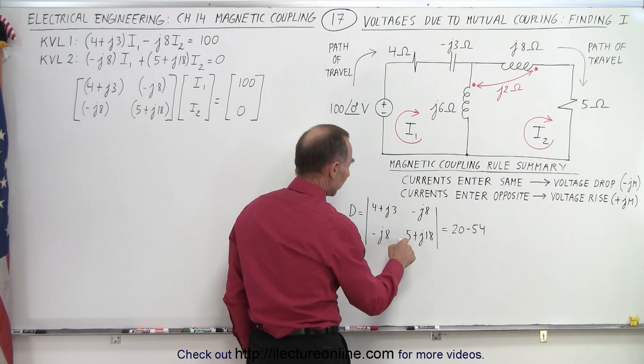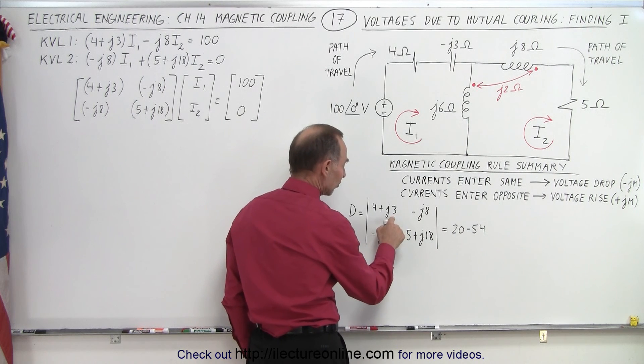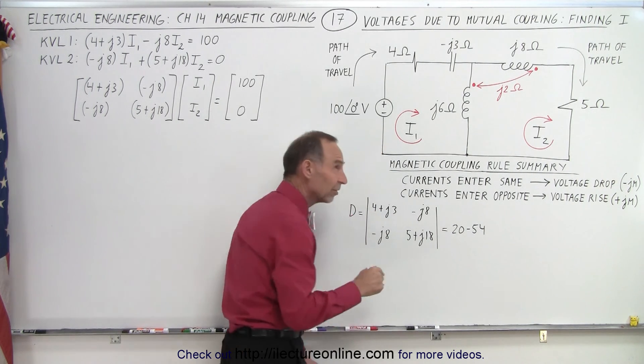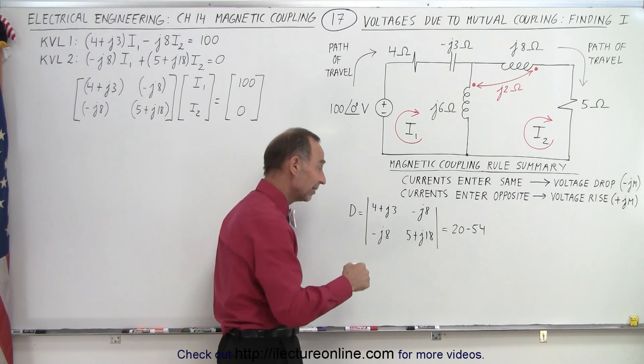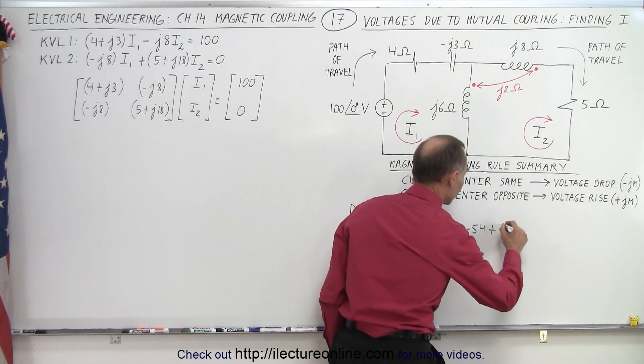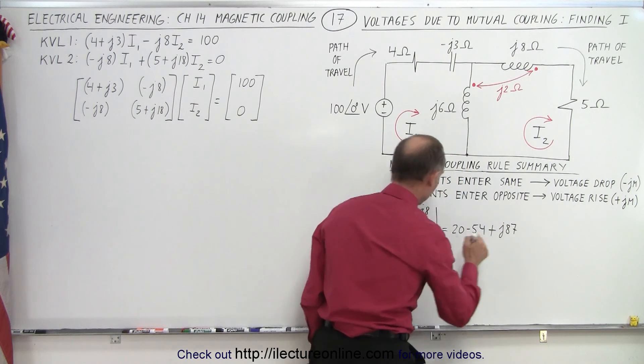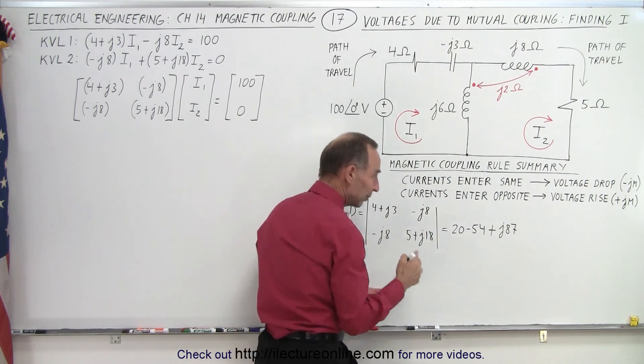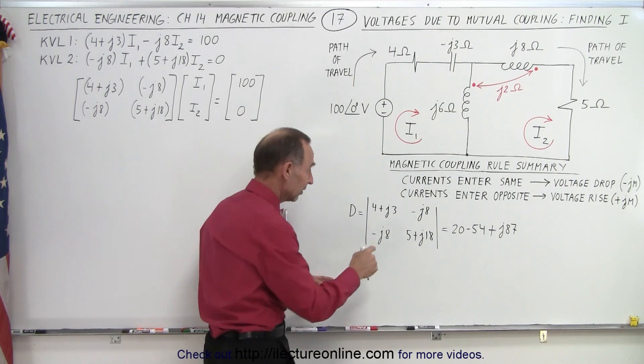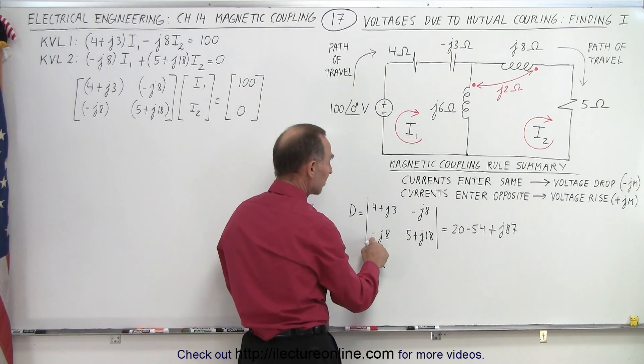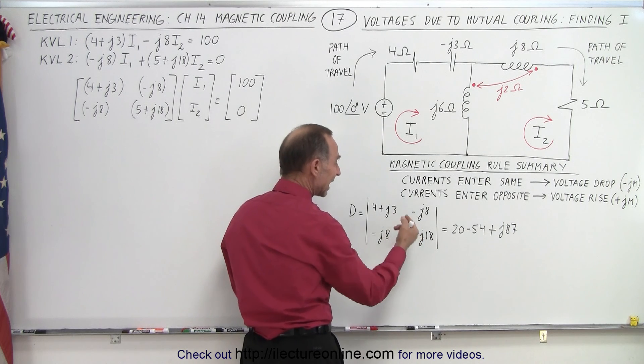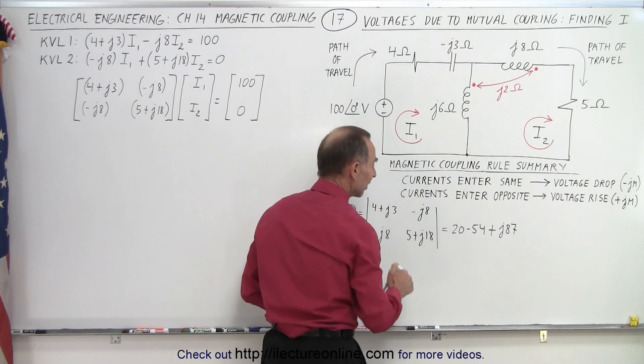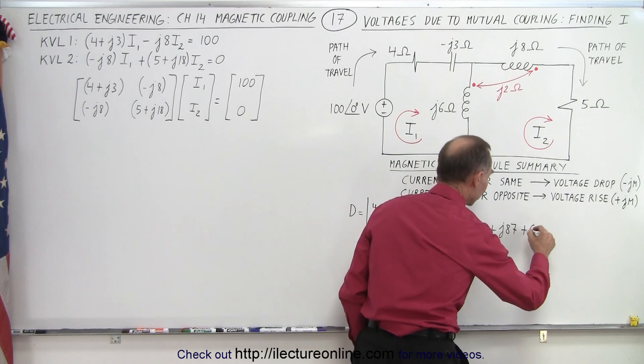And then we have the product of 5 times J3, which is 15J. And 4 times J18, that's 72 plus 15, that's 87, so that would be plus J87. So that's the product of these two. Now we subtract the product of these two. With the negative signs, that gets a little complicated. So minus times minus gives me a plus, but J times J gives me a negative, but since I'm subtracting, that becomes a plus again. 8 times 8, that gives me plus 64.